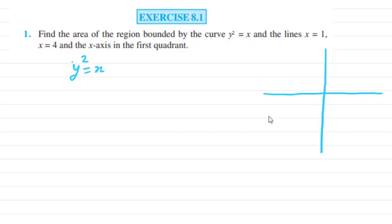we will make the graph for this. As you can see, this is a parabola that passes through (0,0). You can write this as y = √x. Now you need to find the area